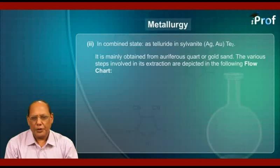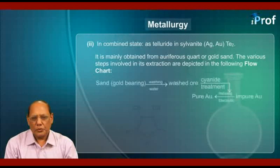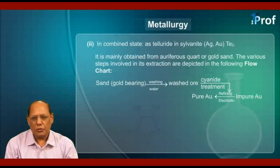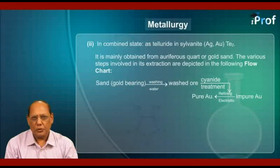Gold is mainly obtained from auriferous quartz or gold sand. The various steps involved in its extraction are depicted in the following flow chart. Gold-bearing sand is taken and subjected to washing by water, then cyanide treatment to get impure gold, which is finally subjected to electrolytic refining so as to get pure gold.